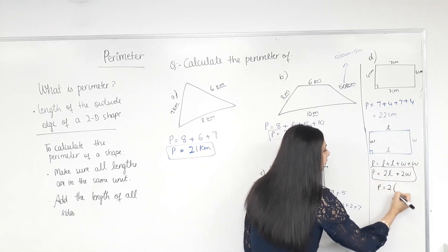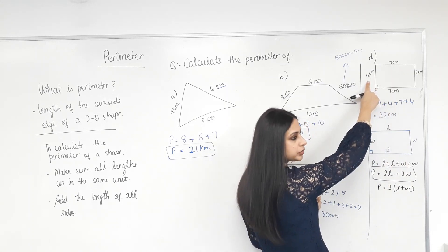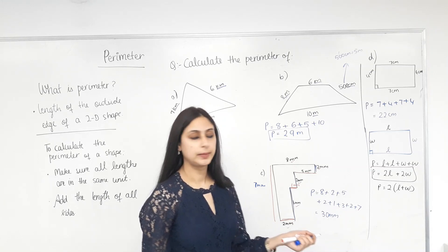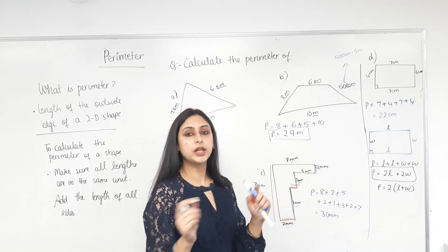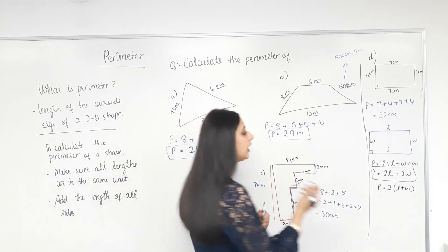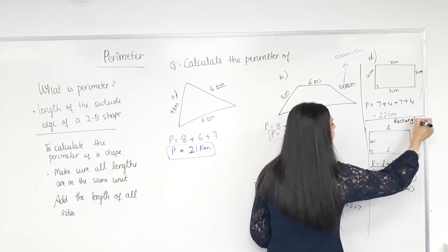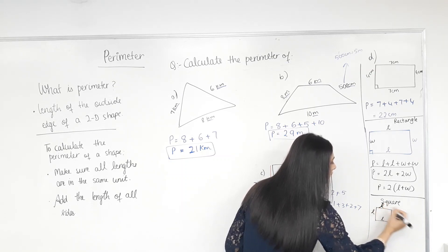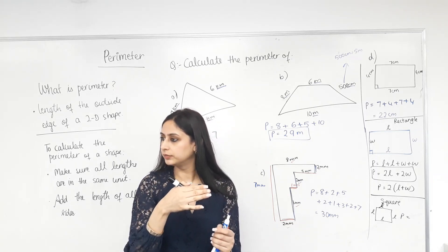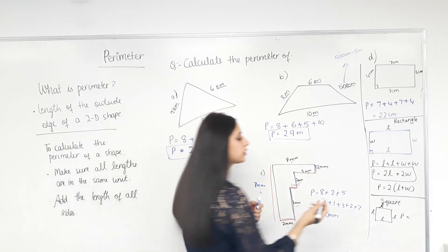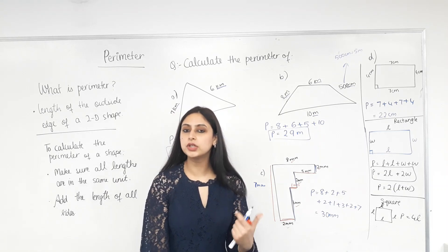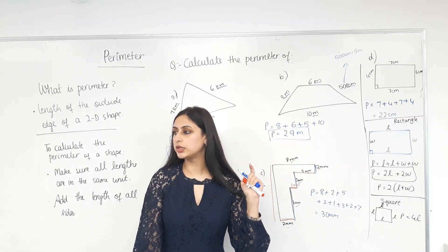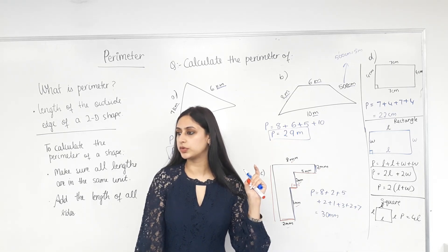We can also write it in factorized form — add length and width first, then multiply by 2. For example, 7 plus 4 is 11, then times 2 gives the perimeter. So P = 2(L + W). For the factorized form the brackets are necessary. Now for a square — are all sides equal? Yes, they're all L. So perimeter equals L plus L plus L plus L, or you can just multiply the length by 4: P = 4L. I'd expect you to use these formulas for rectangles and squares, but for any other shape follow the working out shown. Make sure all measurements are in the same units.